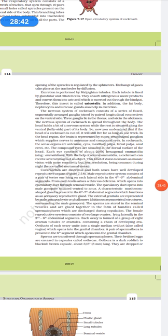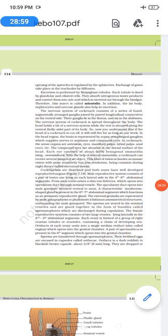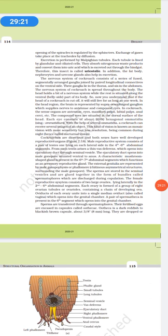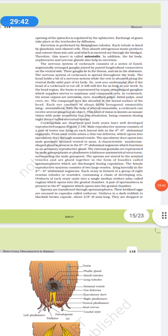Excretion is performed by malpighian tubules. Each tubule is lined by glandular and ciliated cells. They absorb nitrogenous waste product and convert them into uric acids, which is excreted out through hindgut. Therefore, the insect is called uricotelic. In addition, the fat body, nephrocytes and urecose glands also help in excretion. The nervous system in the cockroach consists of series of fused segmentally arranged ganglia. Three ganglia lie in the thorax, six in the abdomen. The nervous system of cockroach is spread throughout the body and its head holds a bit of the nervous system while the rest is situated in the ventral, the belly side. Now, you understand that if the head of the cockroach is cut, it will still live for as long as one week.